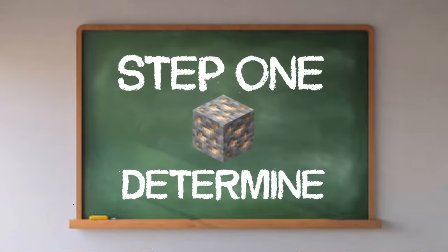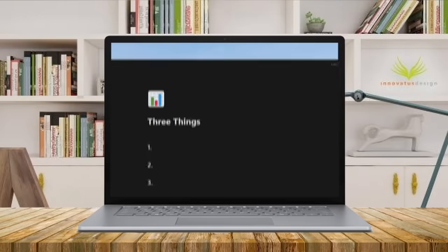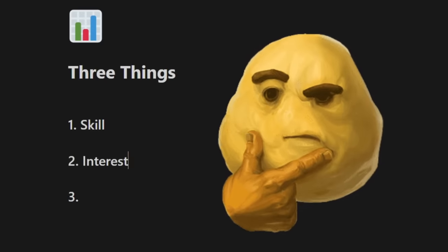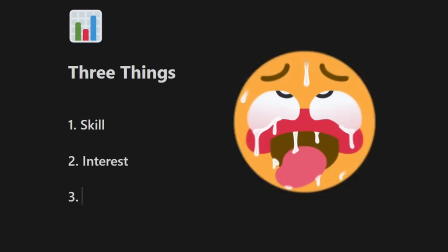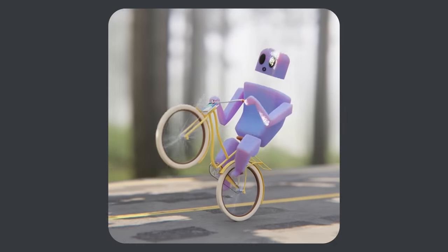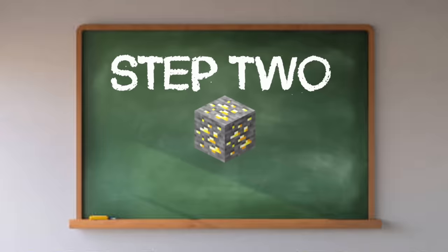Step one is Determine. All you want to do is reflect on three things: what are you good at, interested in, and passionate about? I'll go first — I'm good at animation, I'm interested in products, and I'm passionate about energy drinks.